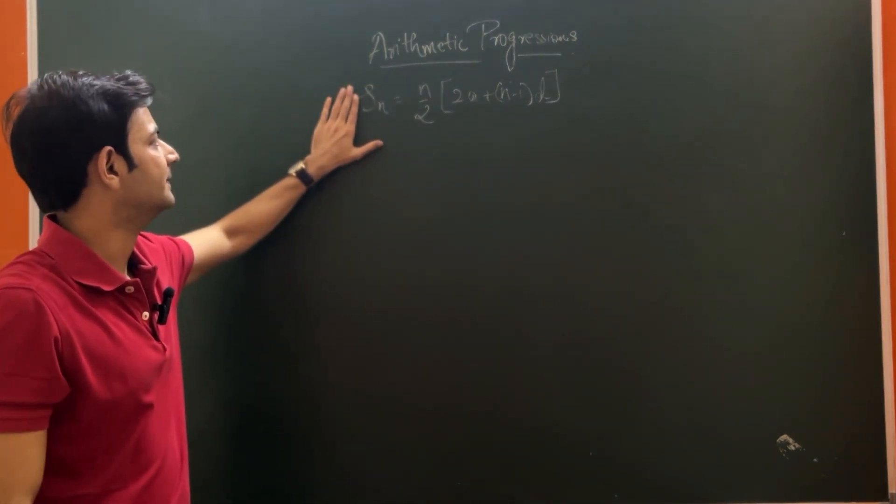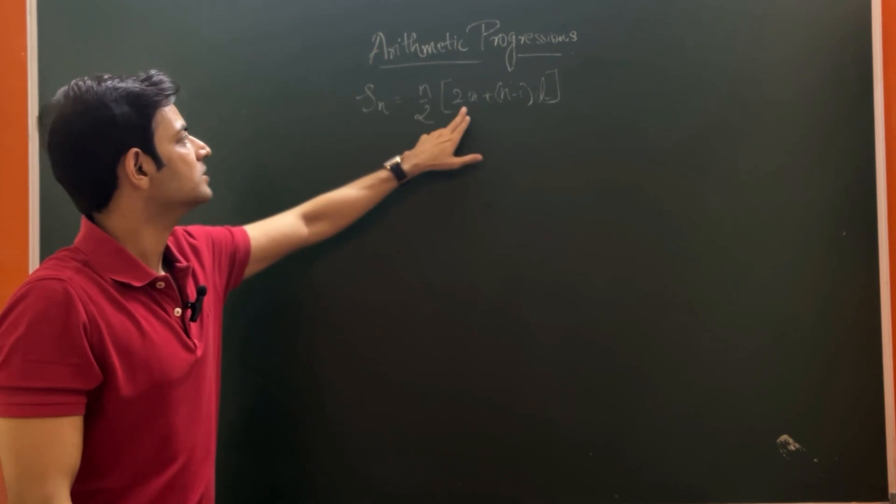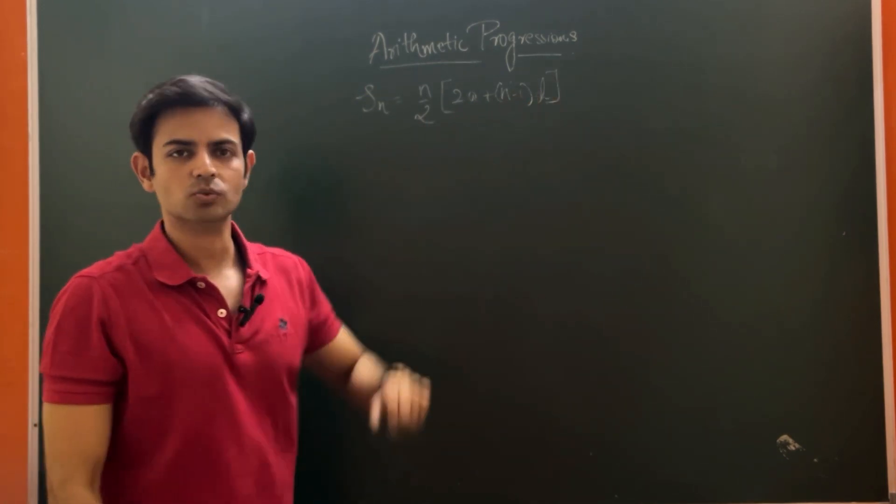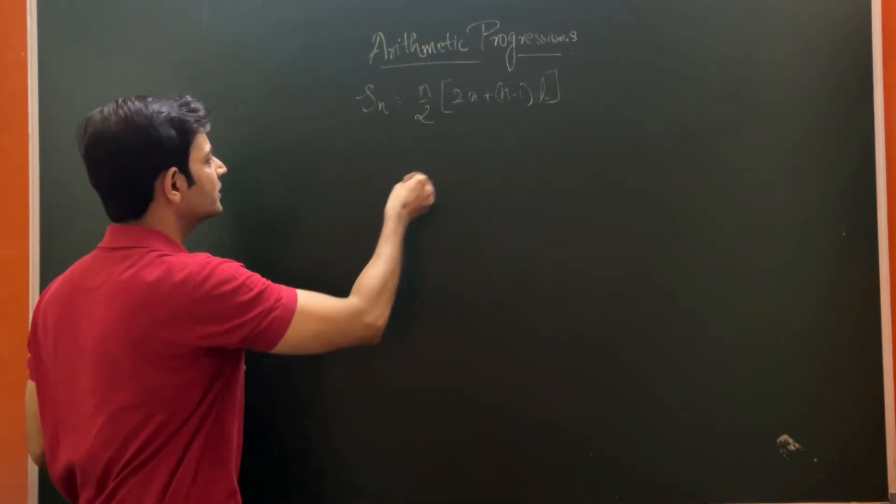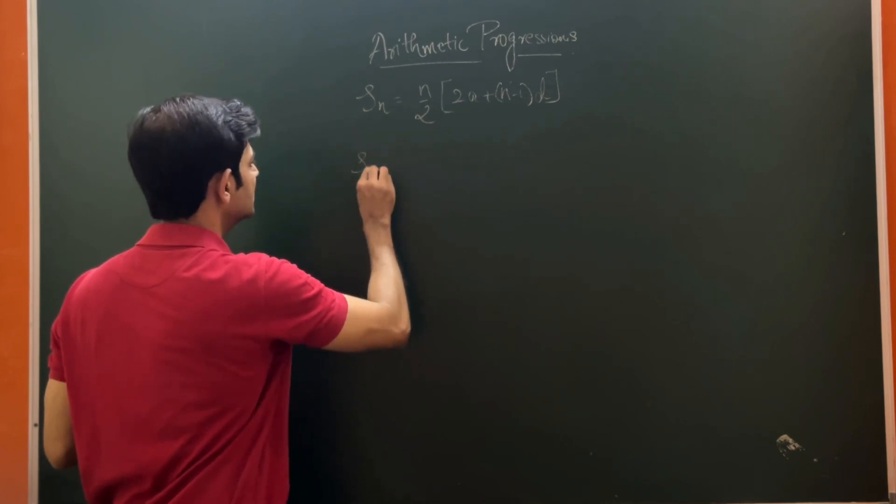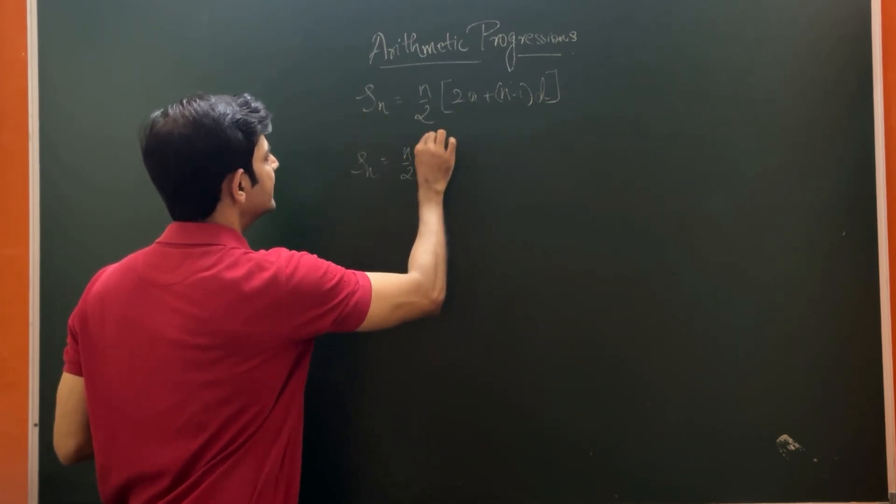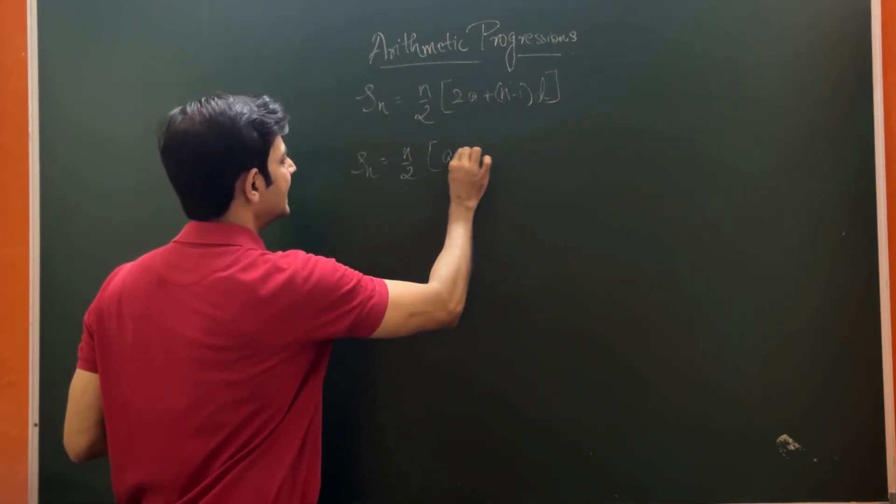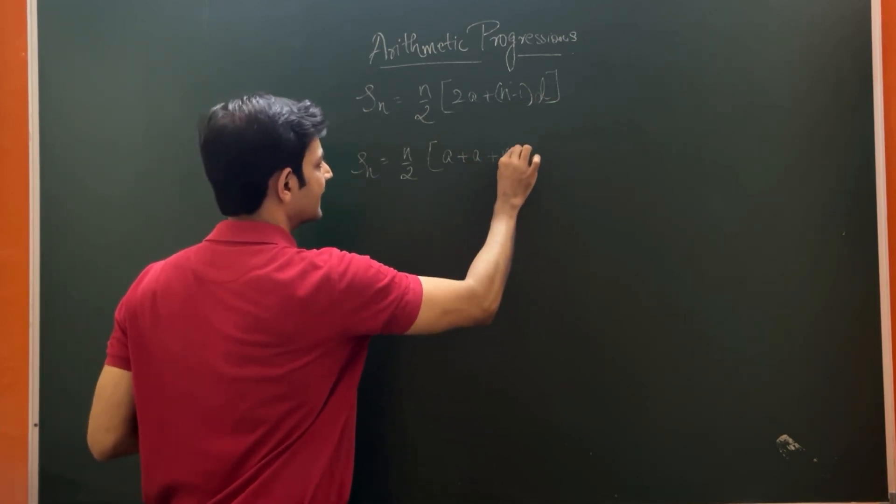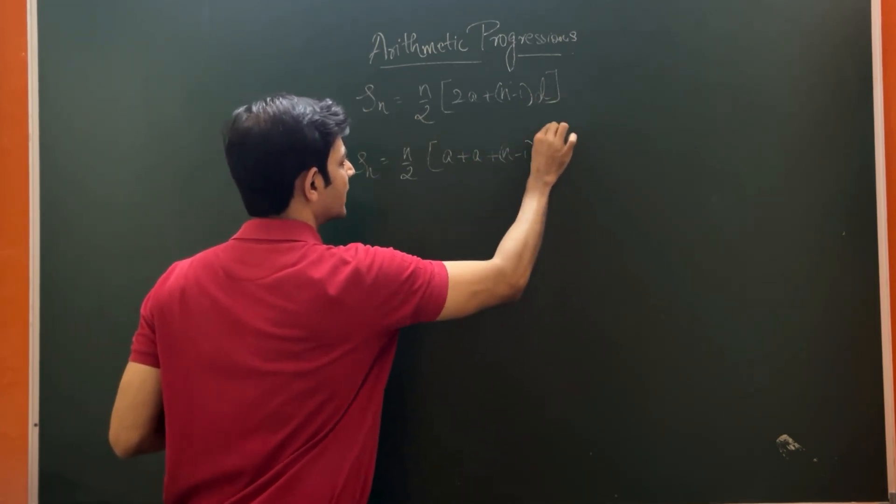SN is equal to N by 2 into 2A plus N minus 1 into D. This is the formula for sum of N terms of an AP, that is N by 2 into 2A plus N minus 1 D.